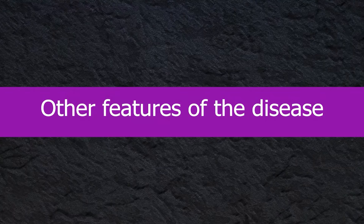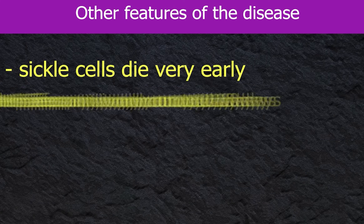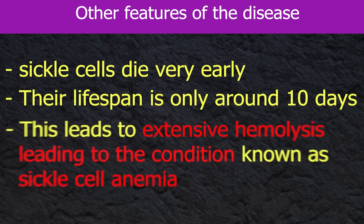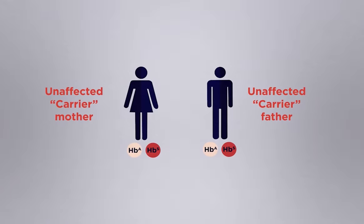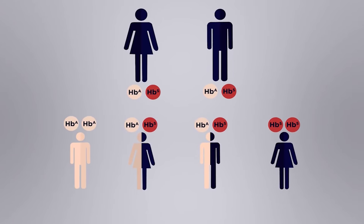In addition to other features of the disease, sickle cells die very early — the lifespan is only around 10 days, in contrast to the 120-day lifespan of normal red blood cells. This leads to extensive hemolysis, leading to the condition known as sickle cell anemia.